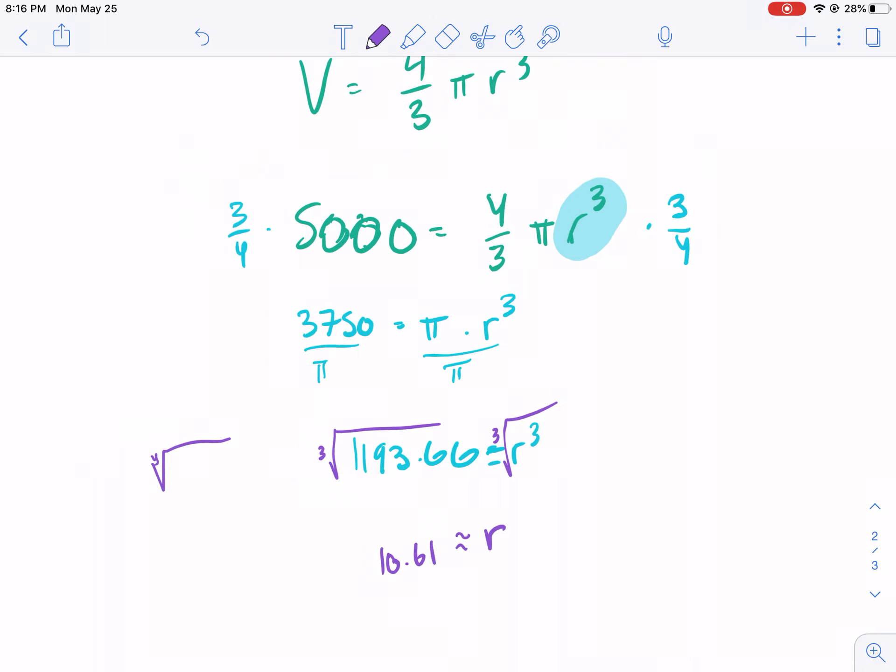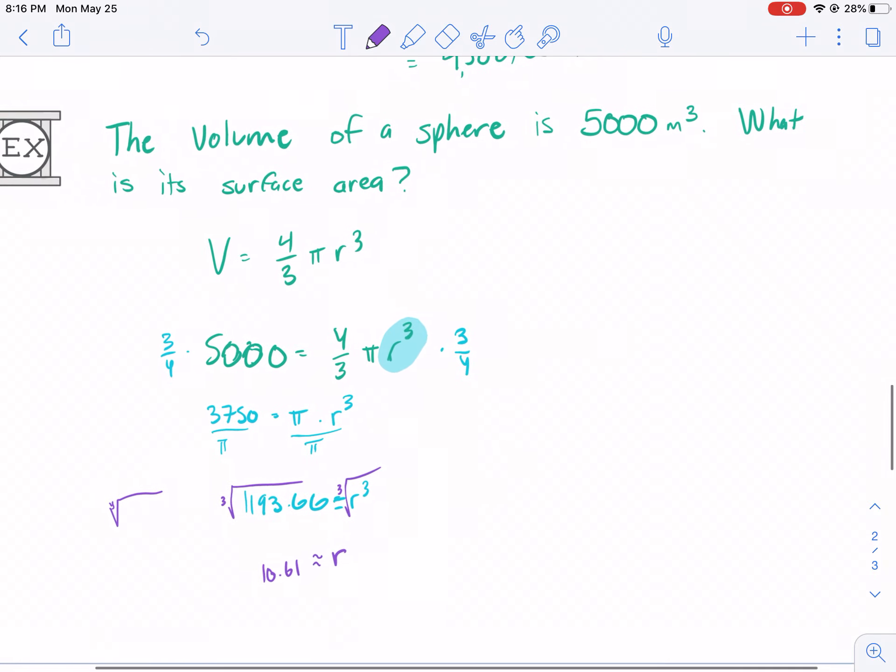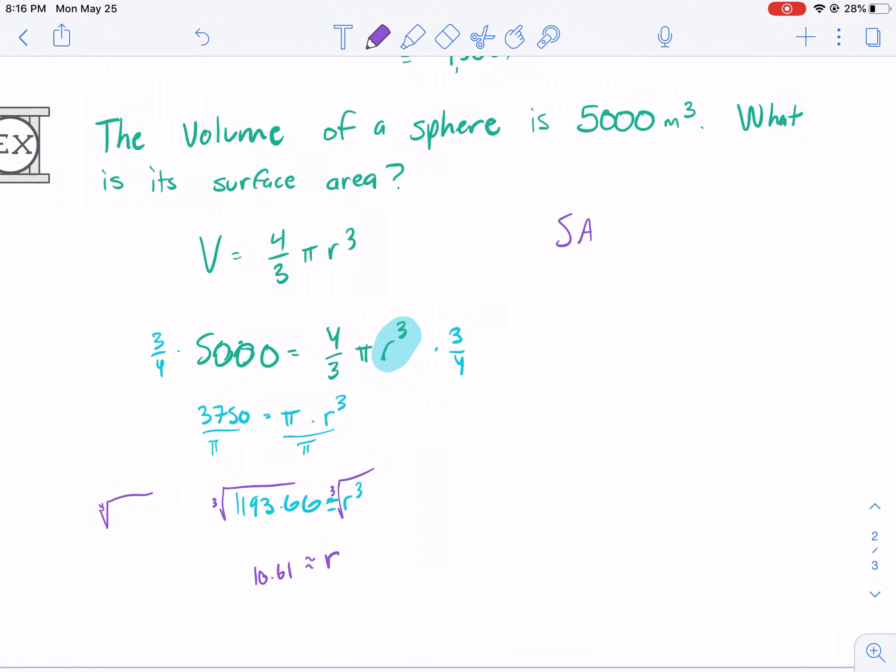Now that I have r equals 10.61, I'm ready to calculate my surface area. So, surface area is equal to 4 pi r squared. I know my r is 10.61. So, I do 10.61 squared times by pi times by 4. And, since I'm already doing it in decimal form, I might as well multiply this all out. So, I raise this to the second power. I multiply by pi. I multiply by 4. And, I get surface area equals 1414.